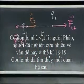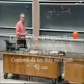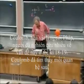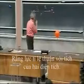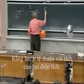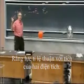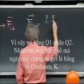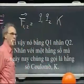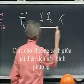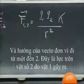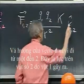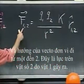Coulomb, the French physicist, who did a lot of research on this in the eighteenth century, found the following relationship: that the force is proportional to the product of the two charges Q1 times Q2, times a constant which nowadays we call Coulomb's constant K, divided by the distance between these charges squared. And it is in the direction of the unit vector that goes from one to two. This is the force on number two due to one.